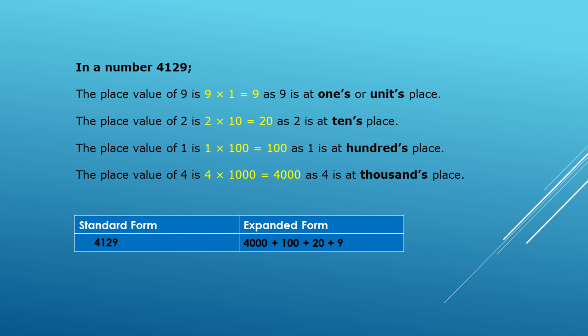Now we will consider 4129. Here, 9 is in the 1's place, so the place value of 9 is 9 × 1 = 9. And 2 is in the 10's place, so the place value of 2 is 20. And 1 is in the 100's place, so the place value of 1 is 100. And 4 is in the 1000's place, so the place value of 4 is 4000. The expanded form of 4129 is 4000 + 100 + 20 + 9.